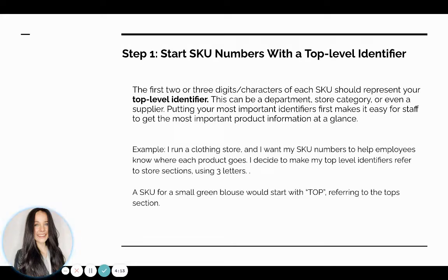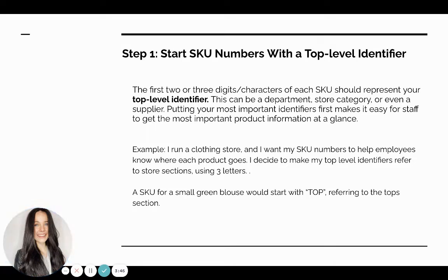For example, let's say I run a clothing store and I want my SKU numbers to help my employees know where each product goes. So I decide to make my top-level identifier — the first two or three digits of my SKU number — indicate department or store section. So if I had a small green blouse, I would start my SKU with 'TOP' referring to the top section of my store. For pants, 'PAN' would refer to the pants section, and so on for all my products.